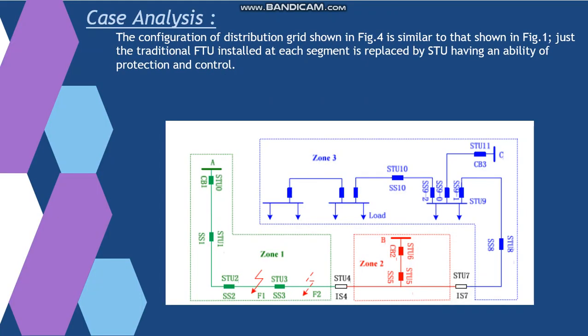It also consists of three zones A, B and C. For example, if a fault F1 occurs during the open loop. STU0, STU1 and STU2 will detect a fault current after the fault has occurred. Because IS4 is opened, STU3 cannot detect the fault current and the other remaining STUs will also see normal current. So STU0 will communicate with STU1 and STU1 will again communicate with STU2. Hence the mode of communication is downstream.